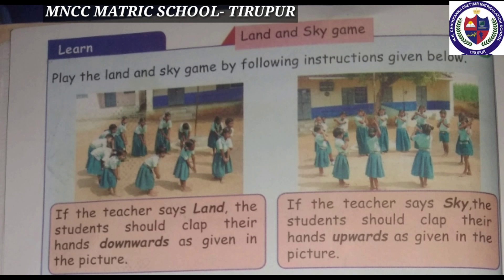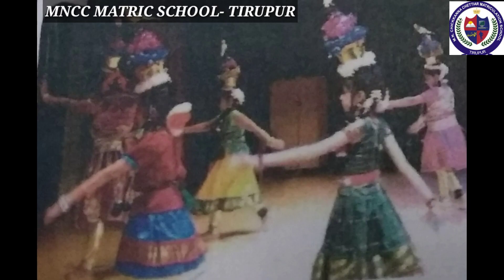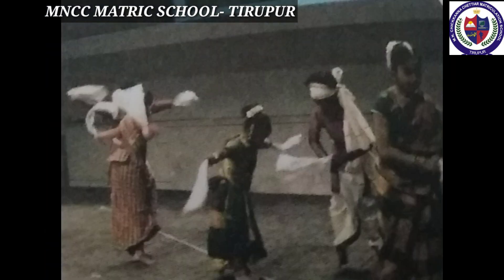Next: the land and sky game. See the first picture — if the teacher says 'land', the student should clap their hands downwards as given in the picture. Next: if the teacher says 'sky', the students should clap their hands upwards as given in the picture.